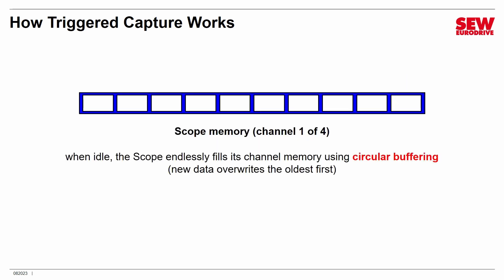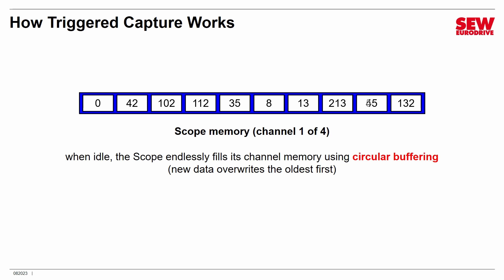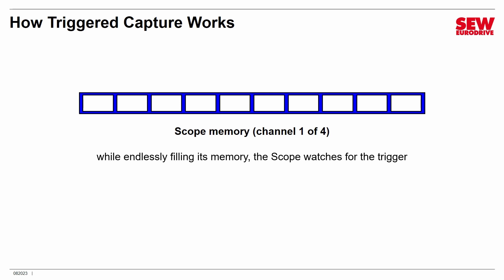Here's another important idea: when it's idle, waiting for the trigger, the scope is endlessly filling its channel memory using a technique called circular buffering. What it does is fill the memory and then go back to the beginning and override the oldest data first in an endless circle. It's just endlessly going in a circle, collecting data, going back around — and this will continue until the trigger happens. The scope does this in the background with all four channels while watching for the trigger at the sample rate you've selected.